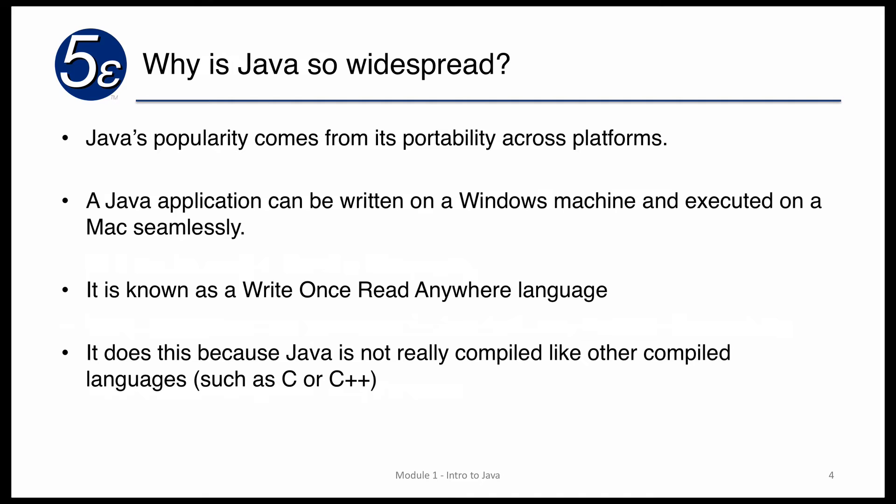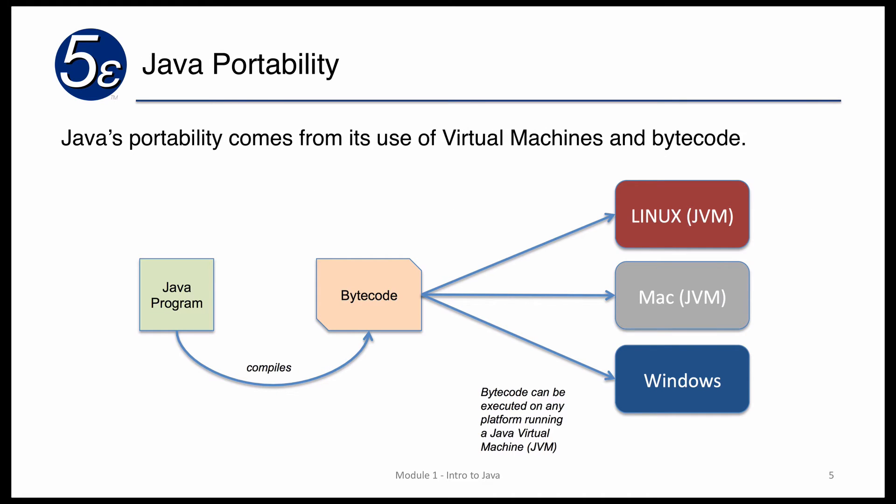Java achieves this because it's not really compiled like other programming languages. In other languages, you compile the code and it uses libraries specific to the chipset. That doesn't really occur in Java because of the use of virtual machines, which sit on top of the actual hardware. Its portability comes from the use of virtual machines and something called bytecode. When we compile a Java program, we get something called bytecode. Bytecode doesn't look like the Java program, but it's something that Java virtual machines will understand.